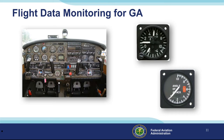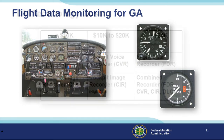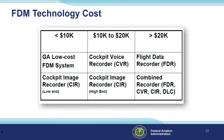And don't forget basic instrumentation such as airspeed indicators, attitude indicators, angle of attack, manifold pressure, RPM, and G indicators, all of which give immediate feedback as to whether design limitations have or are about to be exceeded.